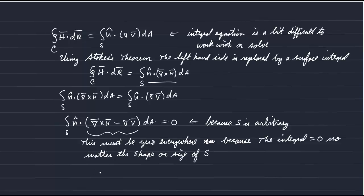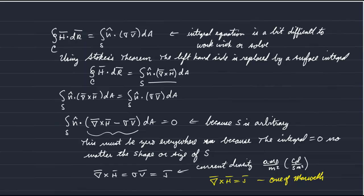And therefore we have the curl of H is equal to sigma times v. And we can replace sigma times v, the charge density times the velocity, by the current density, J. And the units of current densities is amps per meter squared, or coulombs per second per meter squared. And the curl of H is equal to J is one of Maxwell's equations. One of Maxwell's equations of electricity and magnetism.